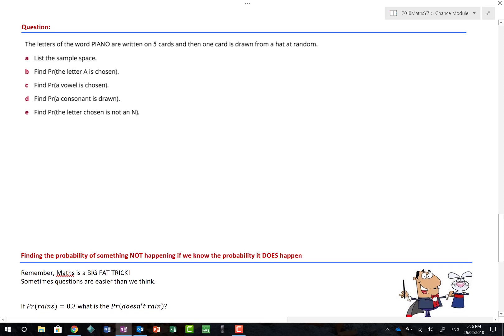One last question before we move on to a really funky piece of math. The letters of the word Piano are written on five cards. So let's draw a picture: 1, 2, 3, 4 and 5. And there's my P, I, A, N, O. And there's nothing wrong with drawing a diagram. One card is drawn at random. List the sample space. Well, there we go. The sample space. Squiggly brackets. P, I, A, N, O.